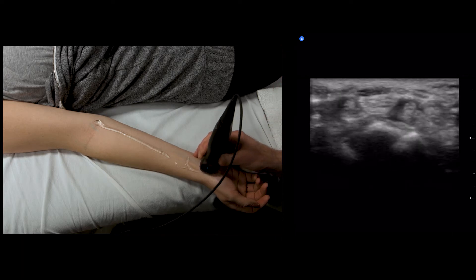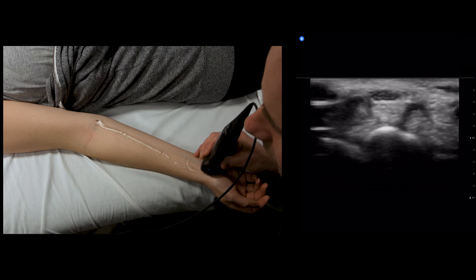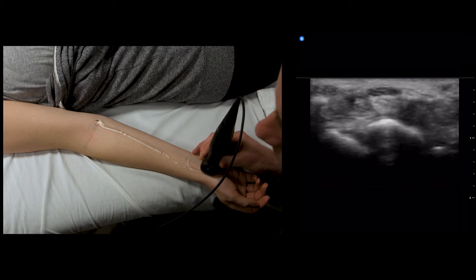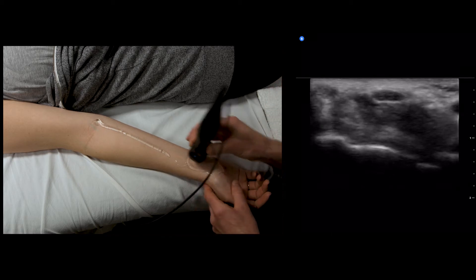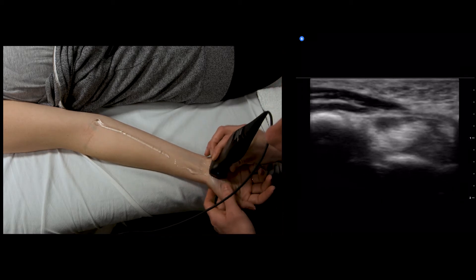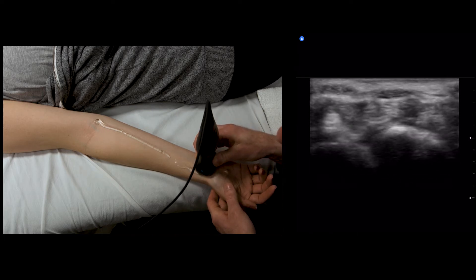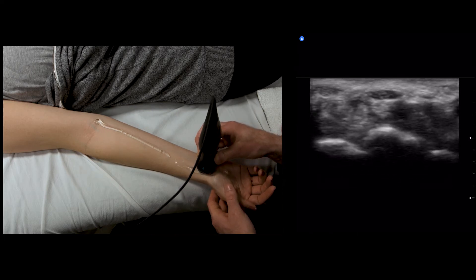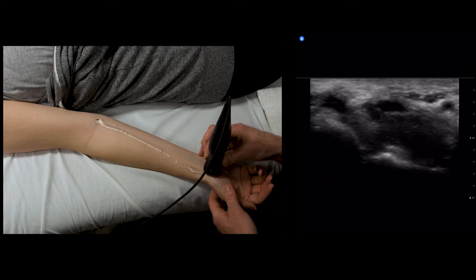The median nerve is the hypoechoic fascicular structure in the middle of the screen here. We're going to follow it down into the carpal tunnel and make sure we've got enough gel. Here's our median nerve. We're going to run down. The median nerve is going to drop down.